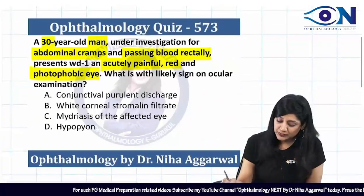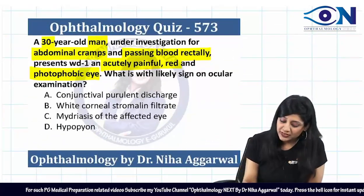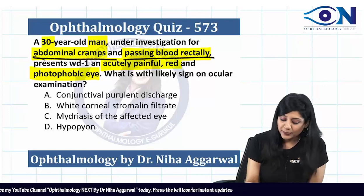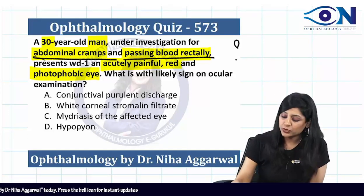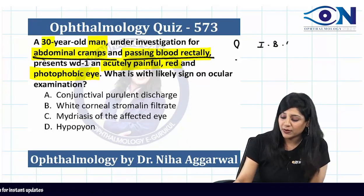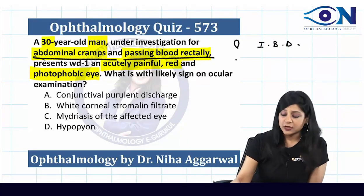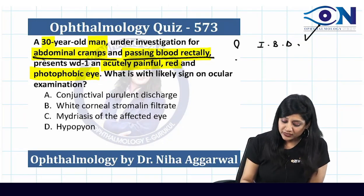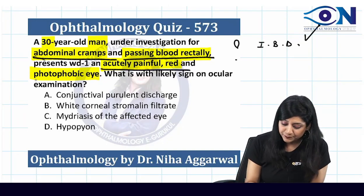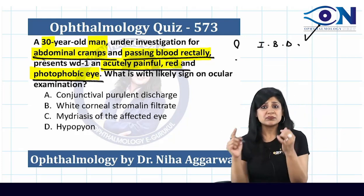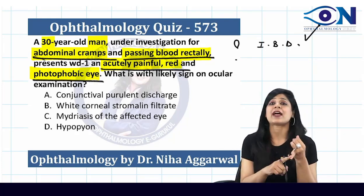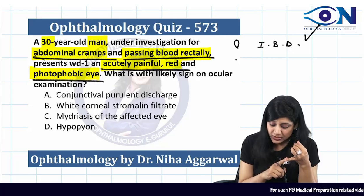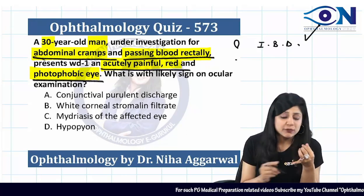Looking at this question, the patient is having blood per rectum and abdominal cramps, so this is most probably a case of inflammatory bowel disease. Along with this, we have an acute red photophobic eye in a patient with inflammatory bowel disease, so we are thinking of acute anterior uveitis.